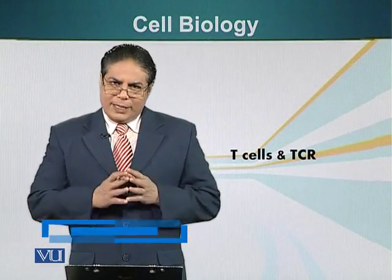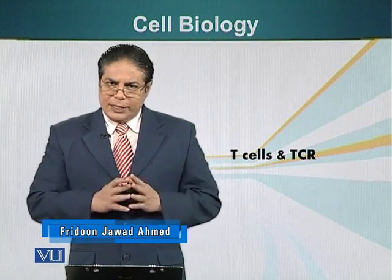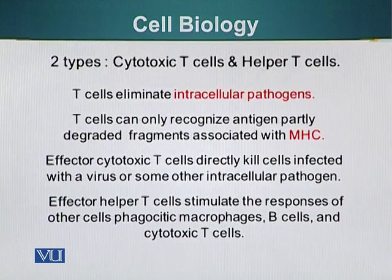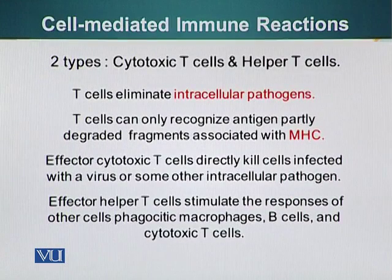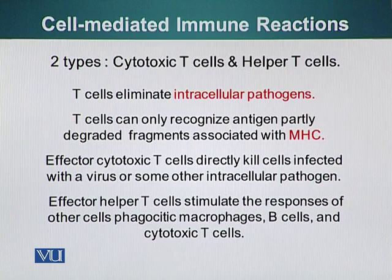So far we've been talking about the B cells; now let's move our focus to the T cells. They also play a very important role in the immune system. Let's talk about T cells and the T cell receptor, abbreviated as TCR. There are two types of T cells: cytotoxic T cells and helper T cells. We are going to focus on these two.